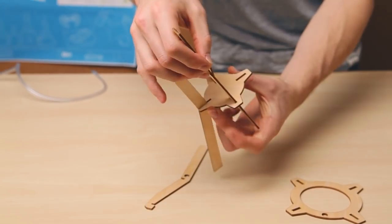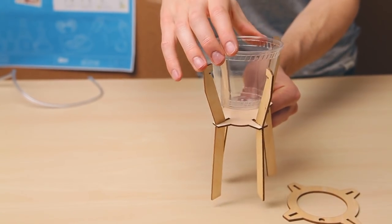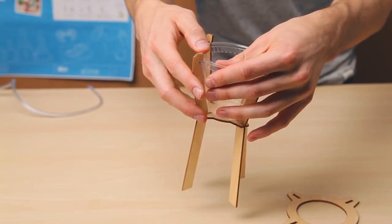Slide the four legs into the small circular piece. Place a cup in the center and notch the rim.